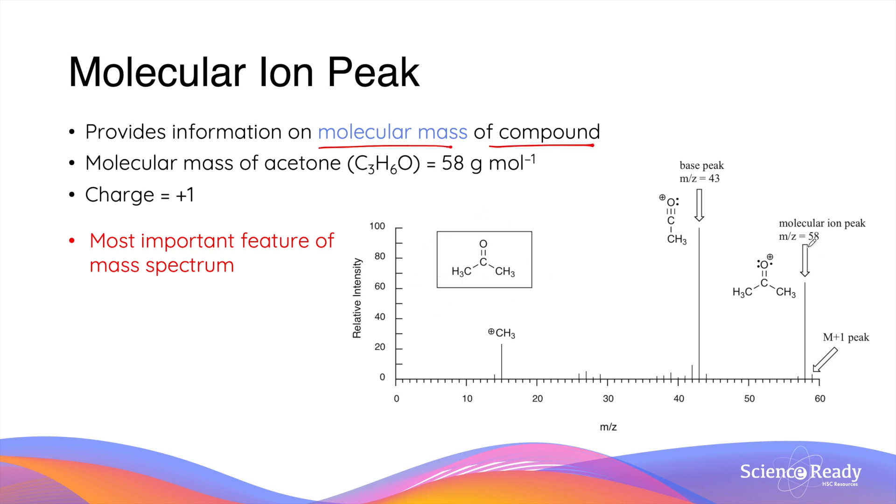So in this case, the mass to charge ratio of the molecular ion peak is 58. And since the charge of the ion is always plus one, this tells us the mass of the compound is 58 grams per mole. And this is exactly the same number as the molar mass of acetone. The molecular ion peak is therefore the most important feature of the mass spectrum because it directly tells us the molecular mass of the sample we are analyzing.